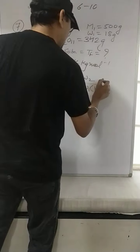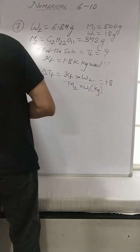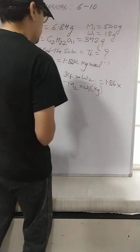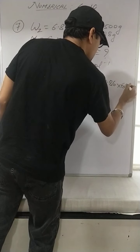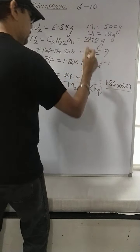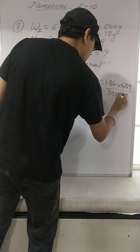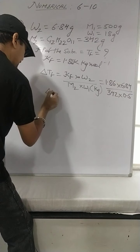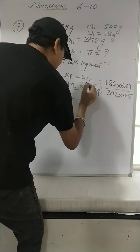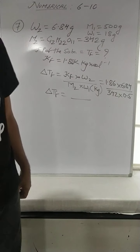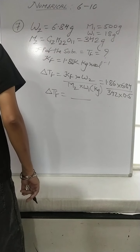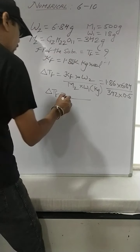Kf = 1.86, W2 = 6.84 g, M2 = 342, W1 = 0.5 kg. So Delta Tf = 1.86 × (6.84/342) × (1/0.5). Calculate this and Delta Tf should come out to 0.0744 Kelvin.